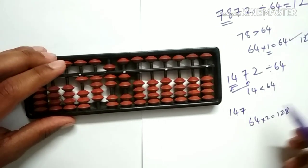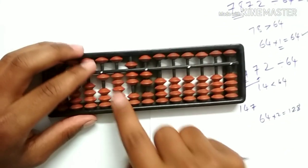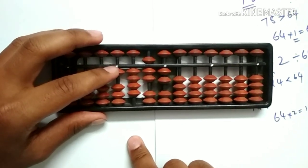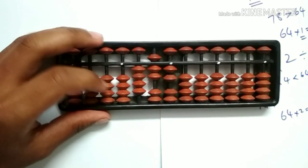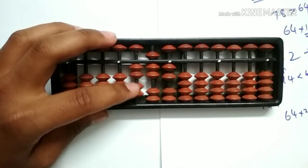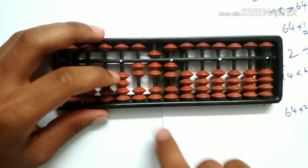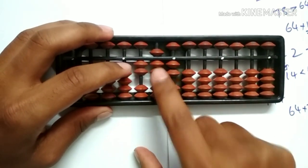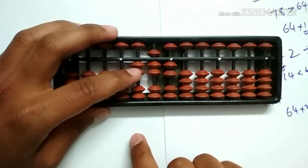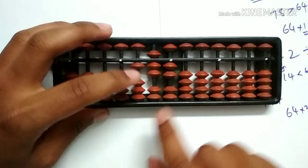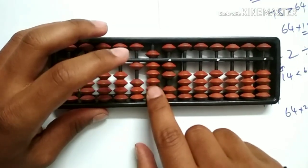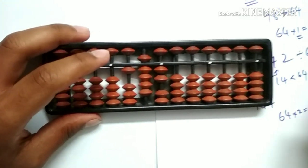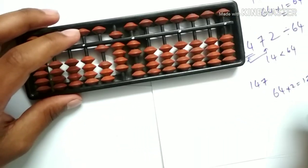Subtract 128 from our dividend. Subtract 1 from the 1000th rod, 2 from the 100th rod, and 8 from the 10th rod. Here it is big friend subtraction — less the friend 10, add the friend 2. We are left with 192. Let's write 192 here.